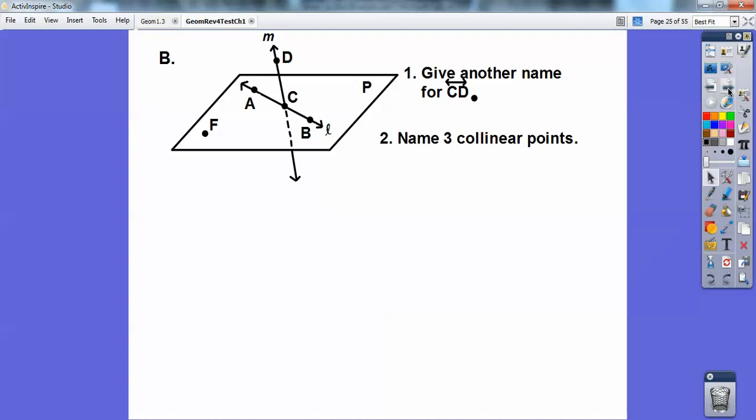All right. Name three collinear points. A, C, and B are all on line L, so they are collinear. All right, name three non-collinear points. There's all kinds of non-collinear points. I'm probably going to choose A, C, and F because they're not on the same line. But there's all kinds of non-collinear points. As long as you include D or F with one of them, those are non-collinear.